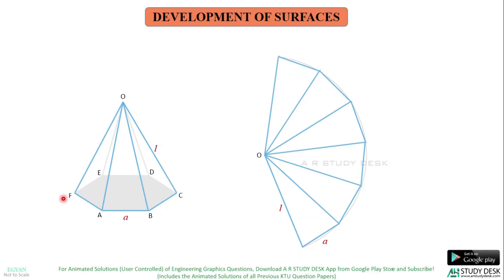So, this point I'll name it as A. So, this is B, C, D, E, F. Again, this point will be A. So, this is called the development of the lateral surface of this hexagonal pyramid.